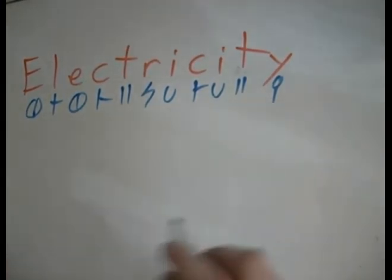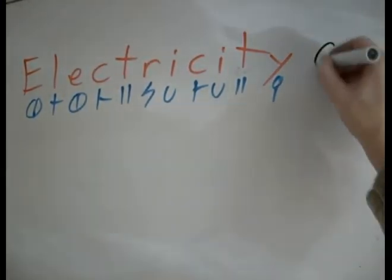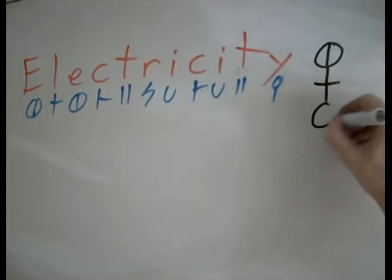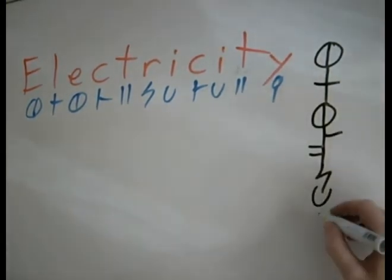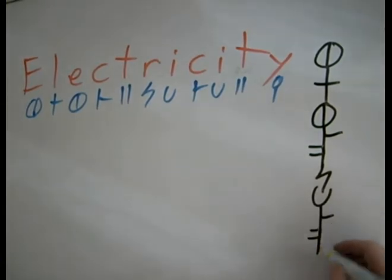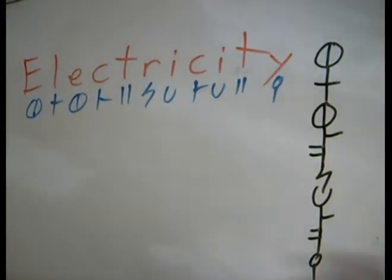So let's first look at the simplest possible way to connect these: E, L, E, C, T, R, I, C, T, Y. Now this looks like a very long chain of letters, but it is completely legible and very clear, but we've got lots we can do with this.